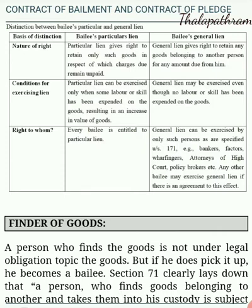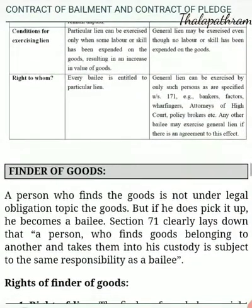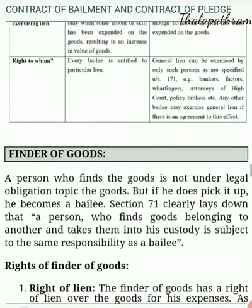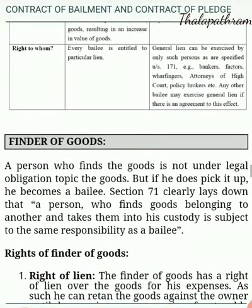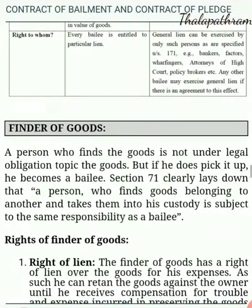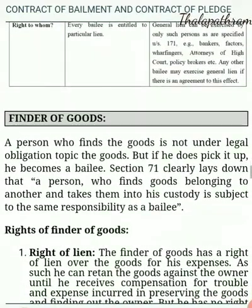Third, right as to whom: Every bailee is entitled to particular lien. General lien can be exercised only by such persons as are specified under Section 171, for example, bankers, factors, wharfingers, attorneys of high court, policy brokers, etc. Any other bailee may exercise general lien if there is an agreement to this effect.